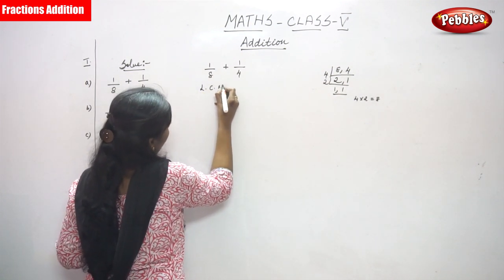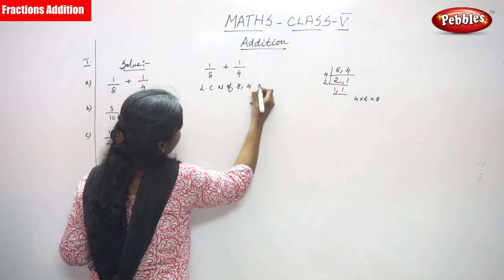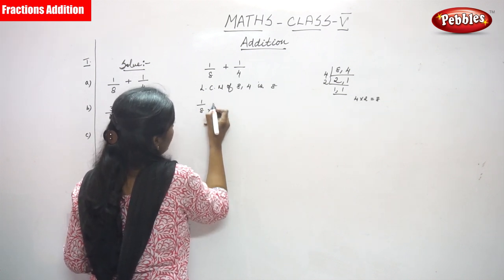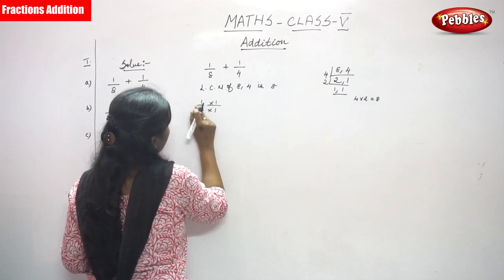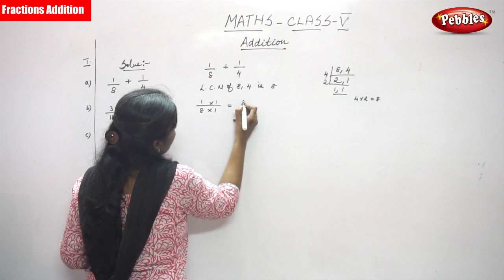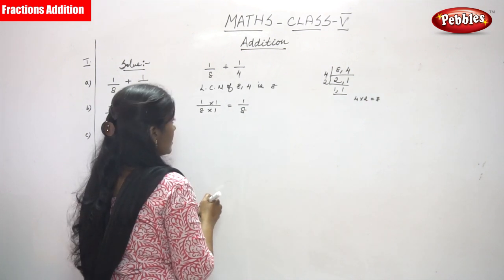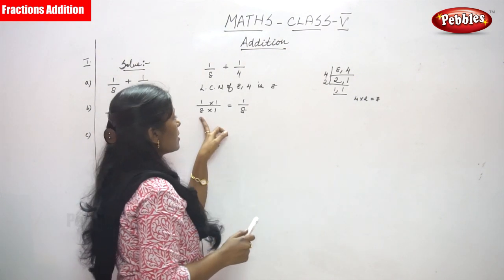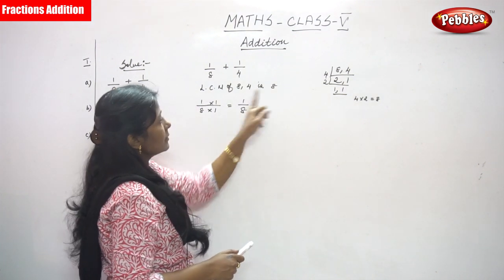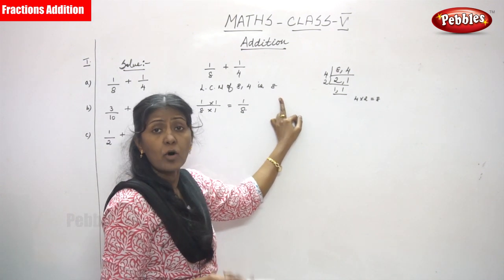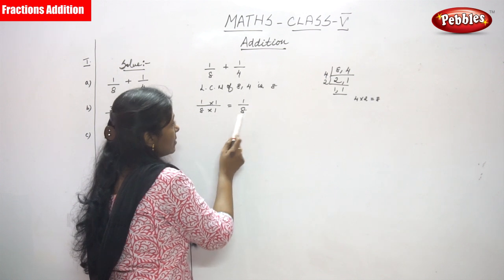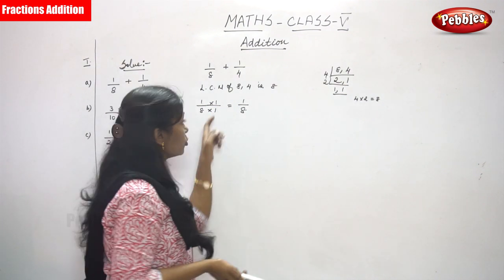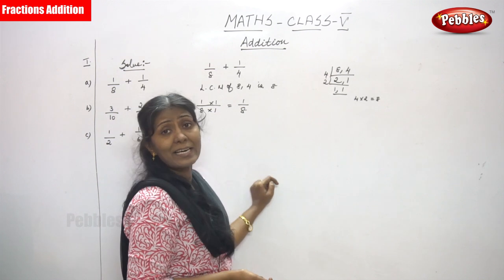The LCM of 8 and 4 is 8. Now, for 1 by 8, I multiply by 1 because the denominator is already 8, which is the common denominator or LCM. If the denominator is multiplied by 1, the numerator is also multiplied by 1, so you get 1 by 8.